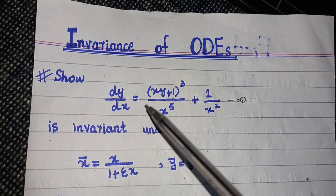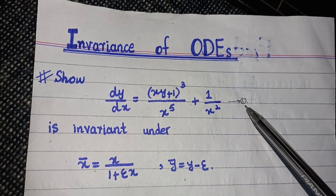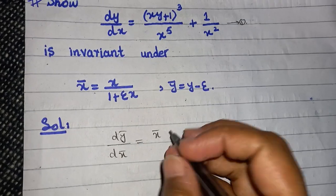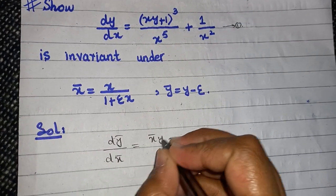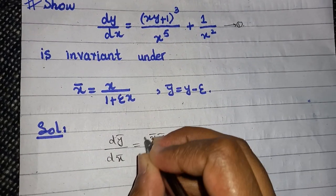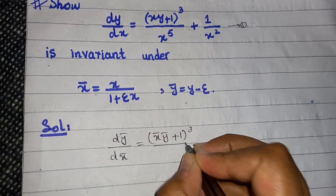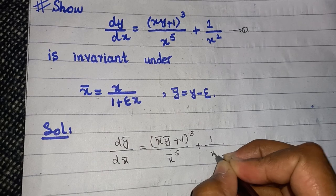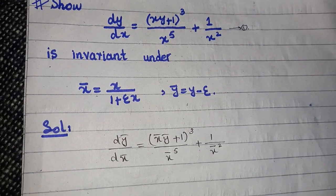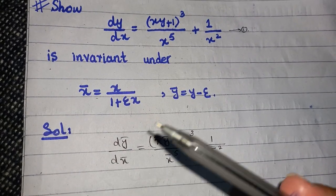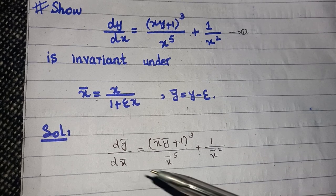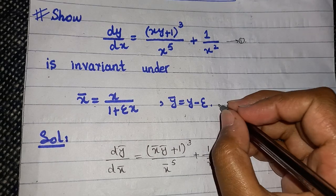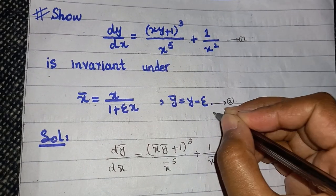Now, if you want to check the invariance of a given ordinary differential equation — say this is equation number one — then you have to replace x and y with x_bar and y_bar. Specifically, replace with x_bar, y_bar plus 1 raised to power 3 divided by x_bar^5 plus 1 divided by x_bar squared, and substitute all these values into equation one.